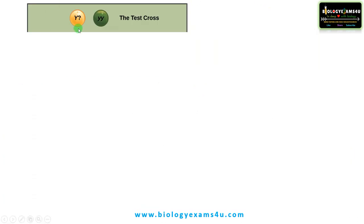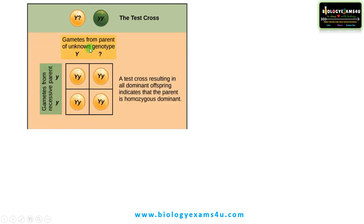Let's take an example of a test cross. The dominant phenotype is crossed with homozygous recessive small y small y. From the dominant phenotype, the gametes are capital Y, and from the recessive phenotype it will be small y small y. Suppose if this is homozygous capital Y capital Y, then the offspring will be capital Y small y, capital Y small y, capital Y small y, and capital Y small y. All offspring will be dominant, indicating that the parent is homozygous dominant.